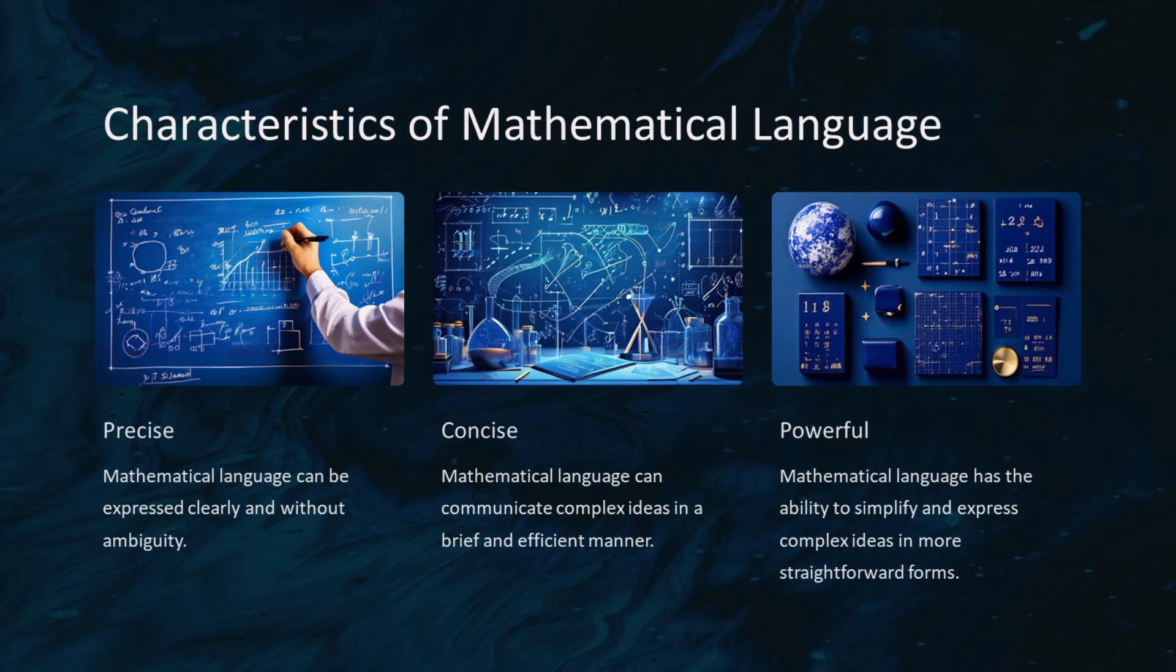Mathematical language is precise, allowing us to express ideas without ambiguity. Every symbol and operation has a specific meaning that contributes to the overall clarity.